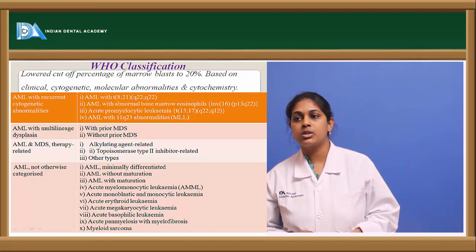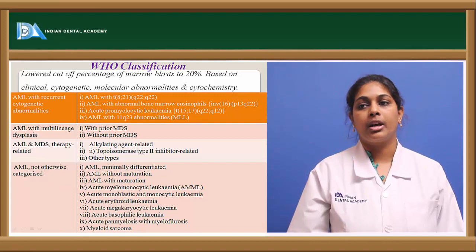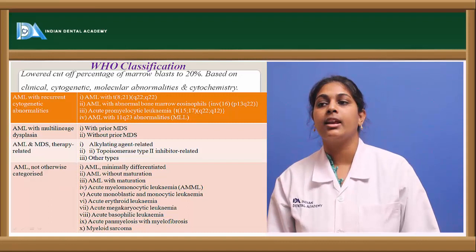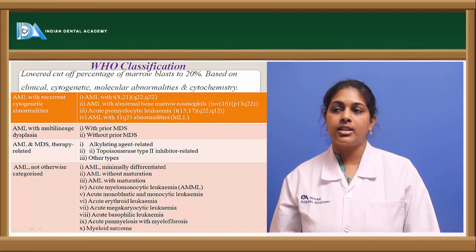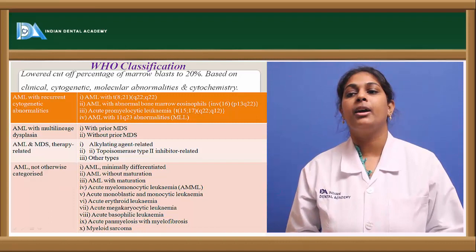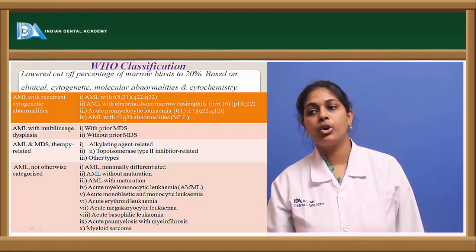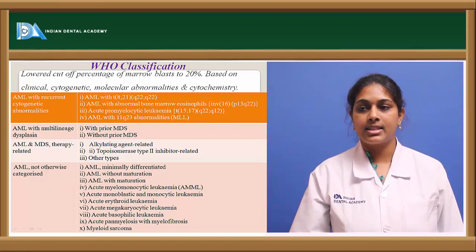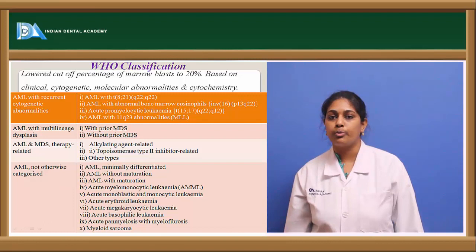AML with 11q23 chromosomal abnormalities is also included. AML with multilineage dysplasia is seen with or without prior MDS. Therapy-related AML and MDS may be caused by alkylating agents, topoisomerase inhibitors, or other agents. AML not otherwise categorized includes minimally differentiated AML, AML without maturation, AML with maturation, acute myelomonocytic leukemia, acute erythroid leukemia, acute megakaryocytic leukemia, acute basophilic leukemia, and acute panmyelosis with myelofibrosis, and myeloid sarcoma.